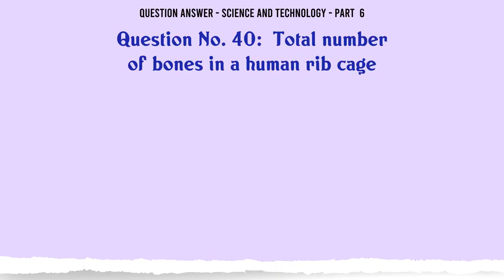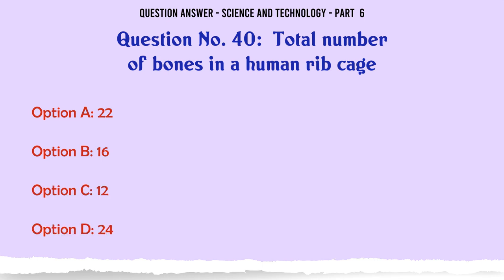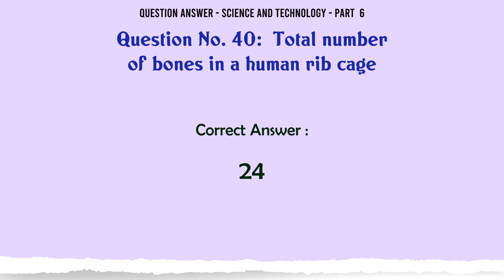Total number of bones in a human ribcage. A. 22. B. 16. C. 12. D. 24. The correct answer is 24.